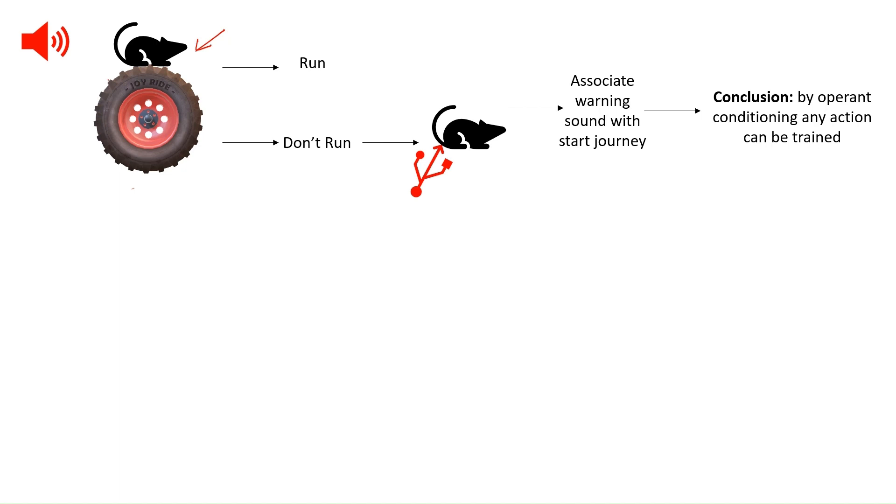In the last video, Skinner landed to a conclusion that through operant conditioning any action can be learned. Here the conclusion is by operant conditioning any action can be trained, because the rat is trained to run with the warning sound, as without running the rat gets an electric shock, which is a kind of punishment.